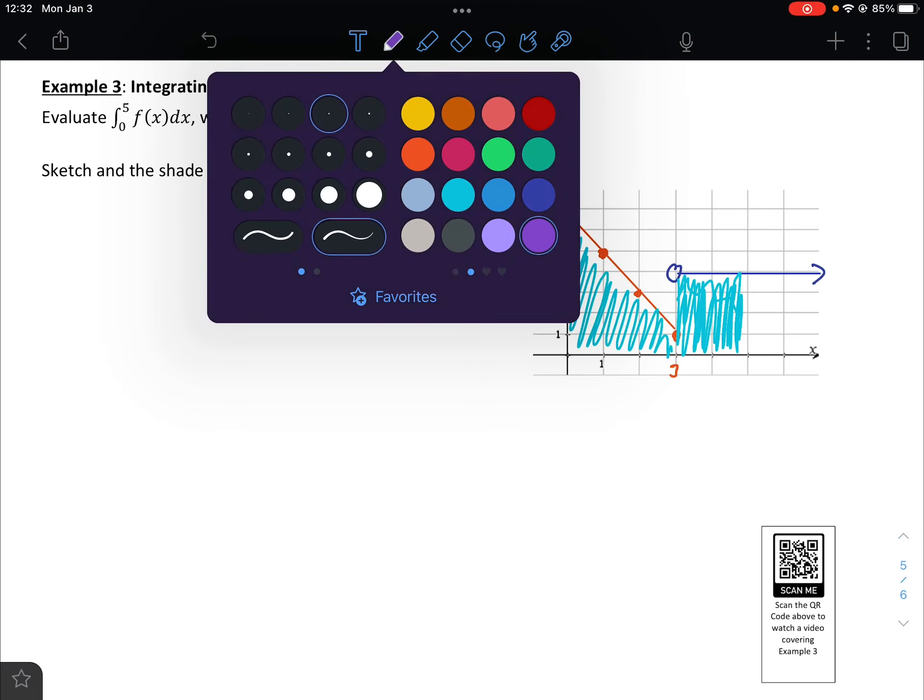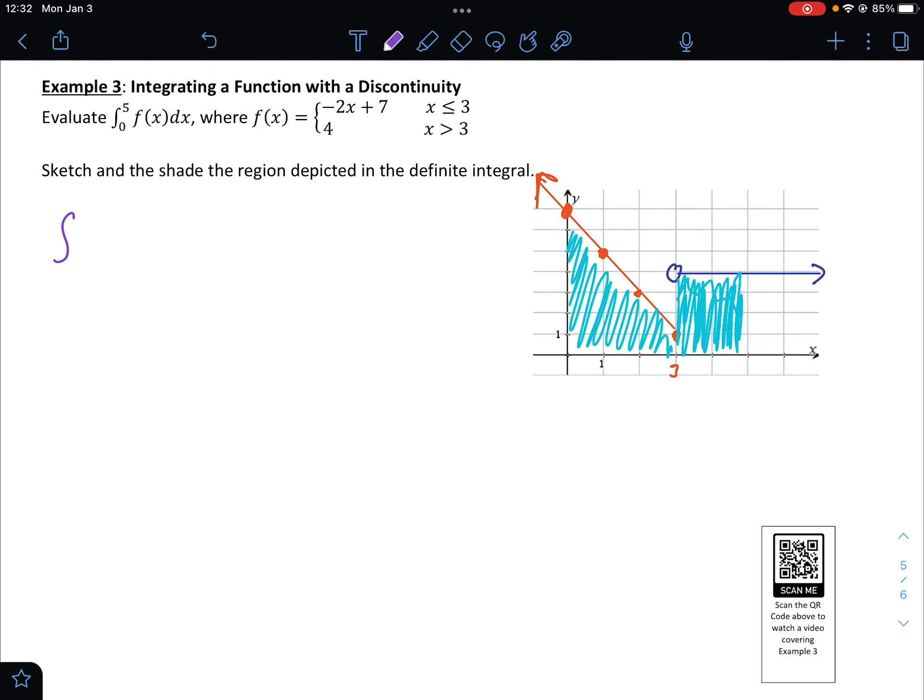All right, so what we can do here is we can break this up into two integrals. So the integral from 0 to 3 of f because we recognize that as a trapezoid plus the integral from 3 to 5 of f because we represent that with a rectangle. All right, so the trapezoid would be 1 half, the height would be 3, its bases would be 7 and 1, and the rectangle would be simply 2 times 4. This would be 3 times 8 over 2 or 3 times 4, which is 12, and the second one, 2 times 4, is 8. So the integral from 0 to 5 of f of x dx is 20.